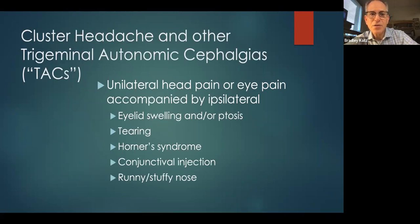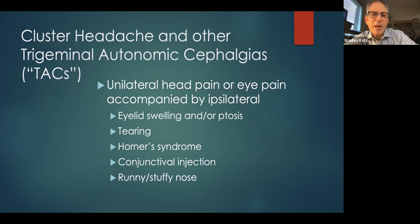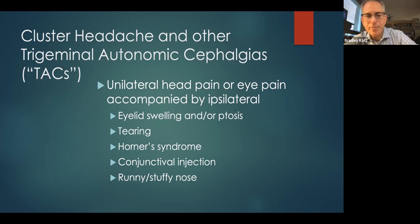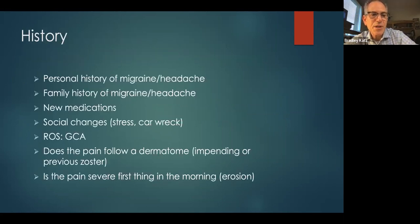Cluster headache shares some similarity with trigeminal neuralgia. It's part of a broader category called the trigeminal autonomic cephalalgias. What distinguishes these from migraine is unilateral head or eye pain accompanied by ipsilateral autonomic symptoms: eyelid swelling, ptosis, tearing, Horner syndrome, conjunctival injection, or a runny/stuffy nose. When someone comes in with sudden, acute, stabbing, severe unilateral pain, I ask about these autonomic symptoms because the treatment of cluster and trigeminal autonomic cephalalgias is different from that of migraine.